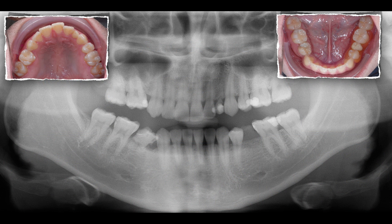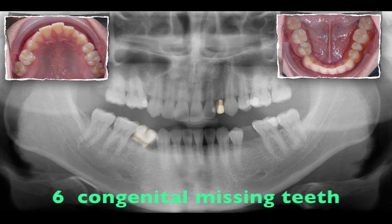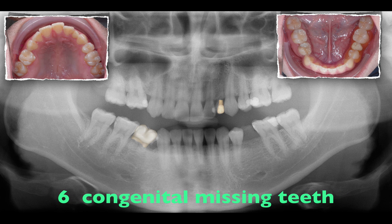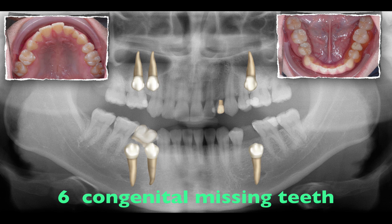Let's see what resulted in this difficult malocclusion. Looking at this panoramic view, there were two remaining primary teeth and six congenitally missing teeth, including four second premolars and two right first premolars.